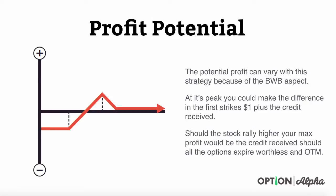Profit-wise, these things can have varying degrees of profits because of the broken wing aspect and the peak that it has in that butterfly. If the stock lands at your short strikes at expiration, you could make the difference in the first strikes plus the credit that you receive. If the stock rallies higher — and this is one of the good features about trading these strategies in a bullish market — all the options expire worthless and you still keep that credit.